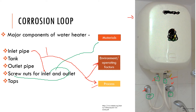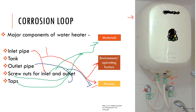The taps would more or less be of a similar material. If we now consider only the process, the inlet pipe would essentially carry cold water, while the outlet pipe and the screws would come under a different process condition. So if we consider these separately, we can understand that this is becoming more and more complex.